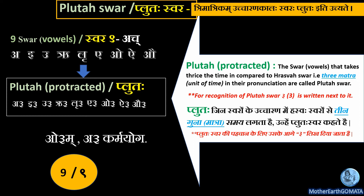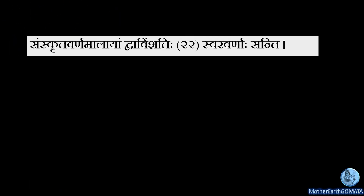You will never find Pluta Swara in classical Sanskrit or in the Hindi language. As the time required for the pronunciation of Pluta Swara is three times the time compared to Hraswa Swara, these Swar are also known as 'Tri Matrik Varna'. The number 'Tri' in Sanskrit means three, so they are known as Tri Matrik Varna.